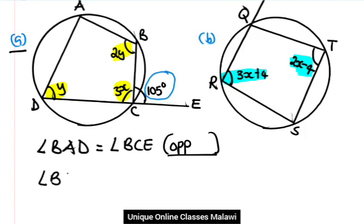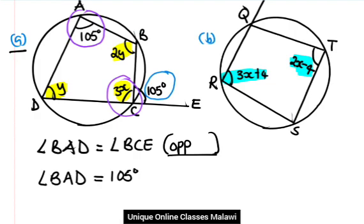Angle BAD, we don't know that one, but we can see angle BCE is 105 degrees. We have 105 degrees. Now you can apply this theorem: the opposite angles of a cyclic quadrilateral add up to 180. We have angle 105 degrees and angle 3x.